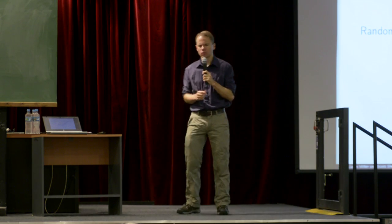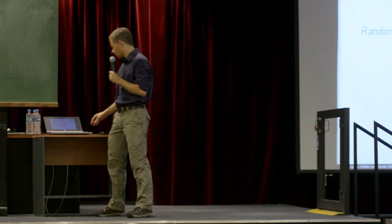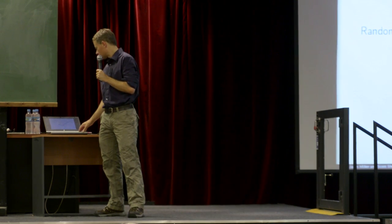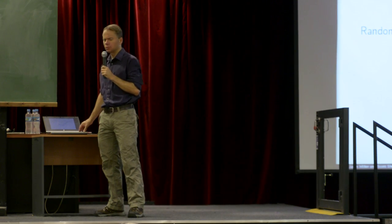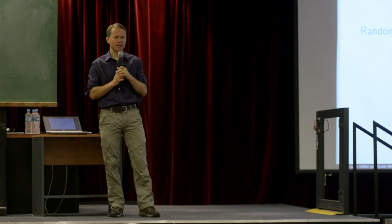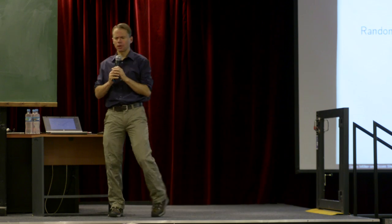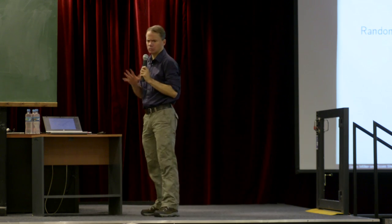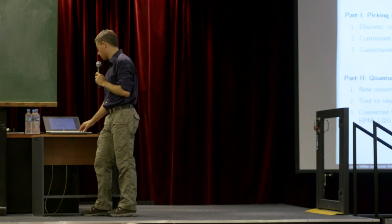This talk is joint work with Jason Miller. We'll discuss something called the Quantum Loewner Evolution, which is a way of making mathematics out of these strange growth processes that occur in many natural settings.